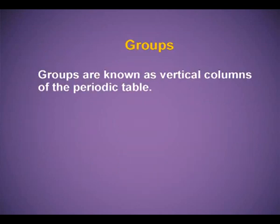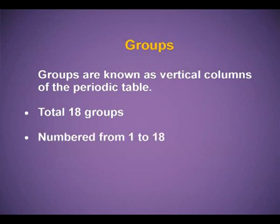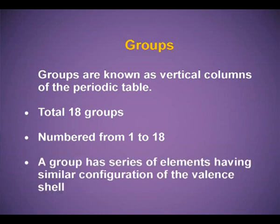Groups — the vertical columns of the periodic table are known as groups. In total there are 18 groups numbered from 1 to 18. A group has a series of elements having similar configuration of the valence shell.